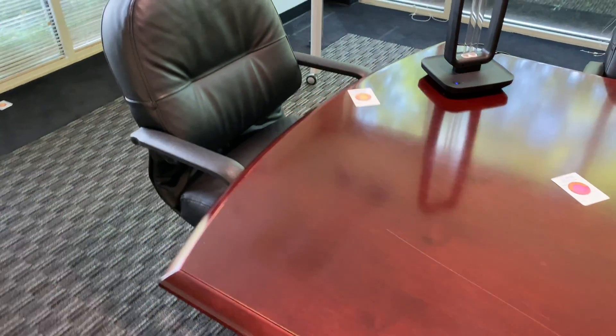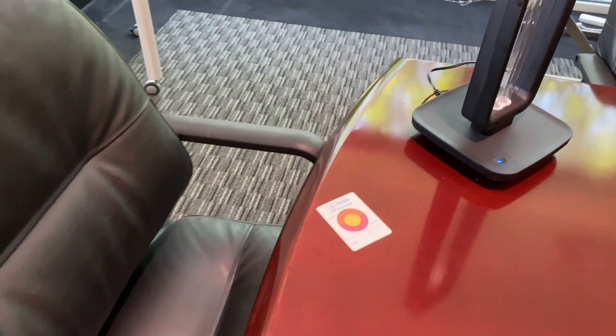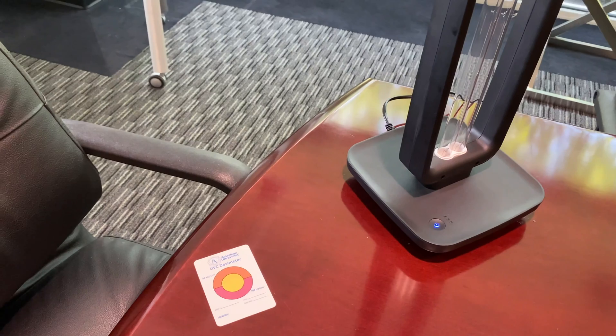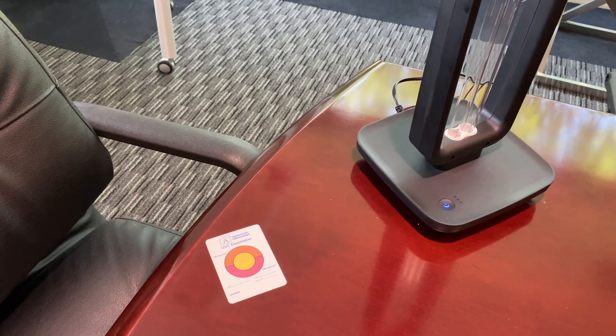UV rays follow a line of sight rule. They only hit surfaces in their direct path. You may need to run multiple cycles to disinfect an entire room.